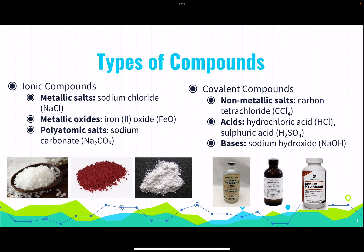We have two types of compounds: ionic compounds, which are a metal and a non-metal, and covalent compounds, which are a non-metal and a non-metal. Examples of ionic compounds include metallic salts like sodium chloride — table salt — metallic oxides like iron oxide, which is rust, and polyatomic salts like sodium carbonate. These are salts we use in our everyday lives.